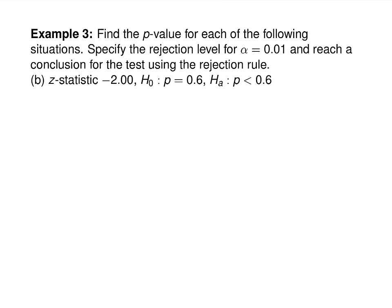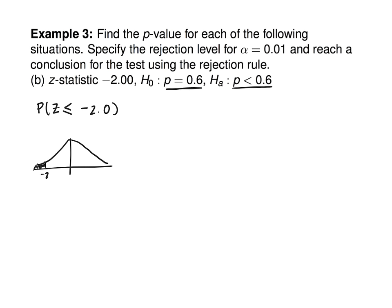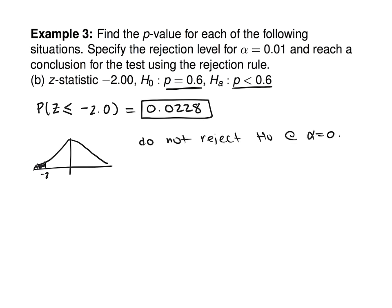Next, suppose our Z-statistic is −2.0, and we're testing H-naught: P = 0.6 versus H-A: P less than 0.6. Because H-A says less than, we find P(Z ≤ −2.0). The picture shows the area to the left of −2.0. Straight from the table, that's 0.0228. In this case, we again do not reject H-naught at the alpha = 0.01 level.